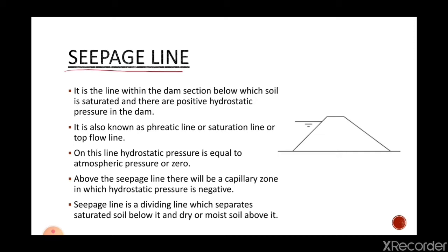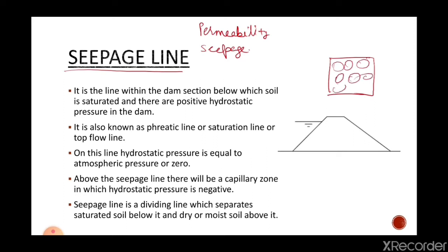Now, seepage line. In seepage analysis, we need to know two terms. The first term is permeability and the second term is seepage. We should know the difference between these two. Suppose this is a soil sample — these are the solid particles, and this is the void between the particles. If these particles are interconnected, then this soil sample will allow water to flow through it. This is a property of the soil. So we can say permeability is a property of material by which water can flow through the soil.